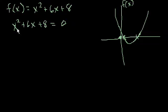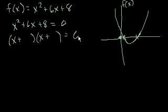So what we're going to do is factor this. We're going to say that x² + 6x + 8 can be written as (x + something)(x + something), and we'll still set that equal to 0.